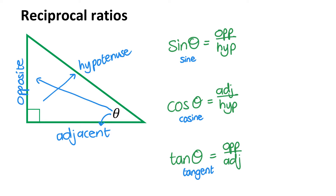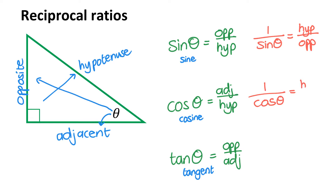Now if I just had these ratios, I don't have all the possible relationships between the sides listed. So I'm going to add the reciprocal ratios on. For sine, the reciprocal will be one out of sine of theta — the reciprocal reverses the fraction, giving hypotenuse over opposite. The reciprocal of cosine will be one out of cos of theta, giving hypotenuse over adjacent. And the reciprocal of tan theta will be one out of tan theta, equal to adjacent out of opposite.